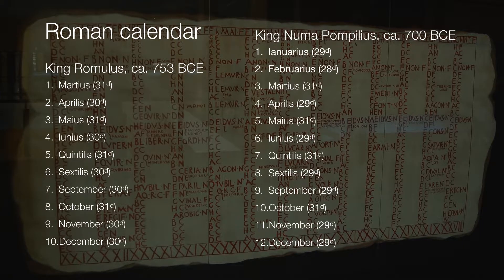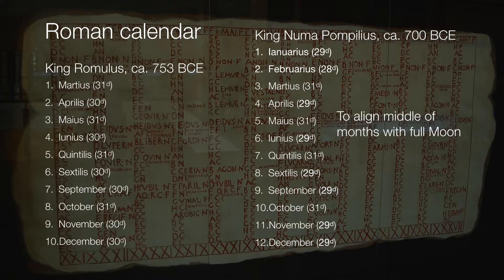So King Pompilus added two extra months — Ianuarius and Februarius, which we now call January and February. And in addition to that, he altered the lengths of days of the year. However, this was all with the intent of keeping the middle of the months aligned with the full moon. So ideally, a month would begin at the new moon, the midpoint would mark the full moon, and then by the end of the month they'd be back to new moon once again.